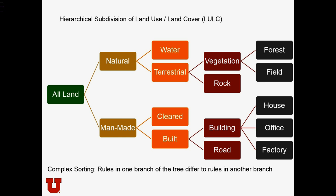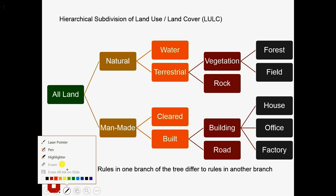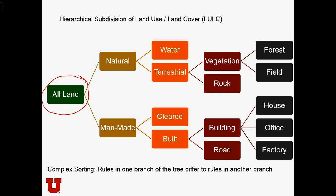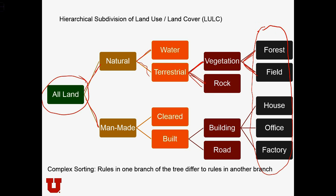Here's a land use / land cover classification system where we start with all land on the left-hand side. We split the surface we're studying into features that are natural and features that are man-made. Among the natural features, we split those covered by water and those that are terrestrial. Things on land can be either vegetation or bare rock, and vegetation can be further split into forest or field. This classification tree can contain hundreds of ending types, as used for example by the US Geological Survey.